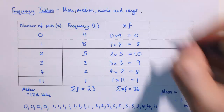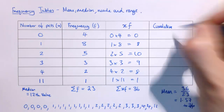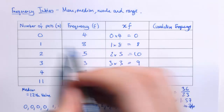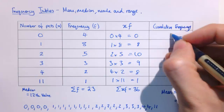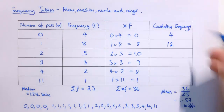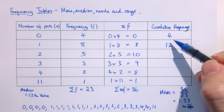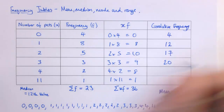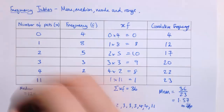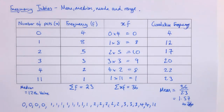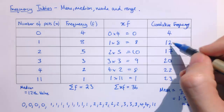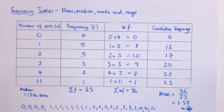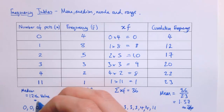A useful idea here is cumulative frequency, which tells you how many values there are up to and including a given value. There are 4 that are 0. Adding 4 plus 8 gives 12 — meaning there are 12 up to and including 1. Adding the 5 gives 17 up to and including 2; 20 up to and including 3; 22 up to and including 4; and 23 up to and including 11. This helps us see that the 12th value falls in the section for 1. There are 4 zeros and 8 ones, so the 12th value is a 1. The median is 1.